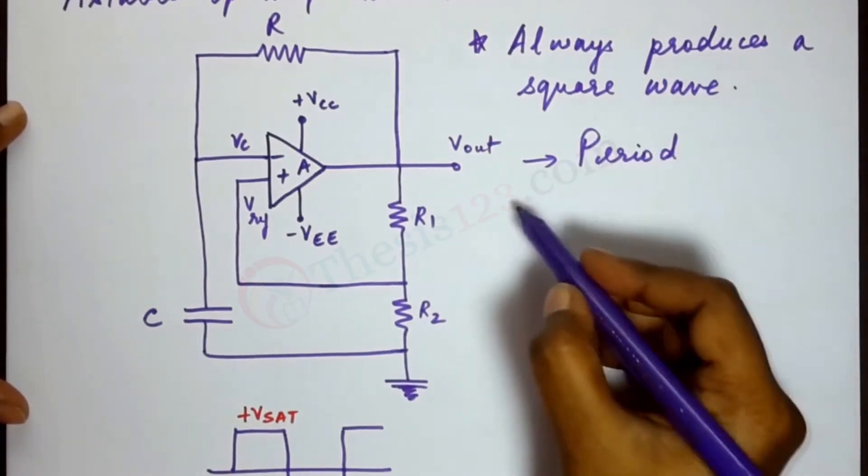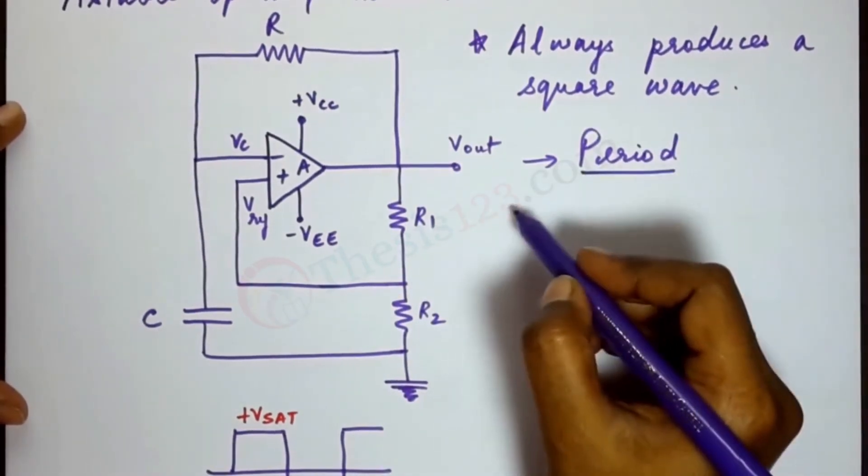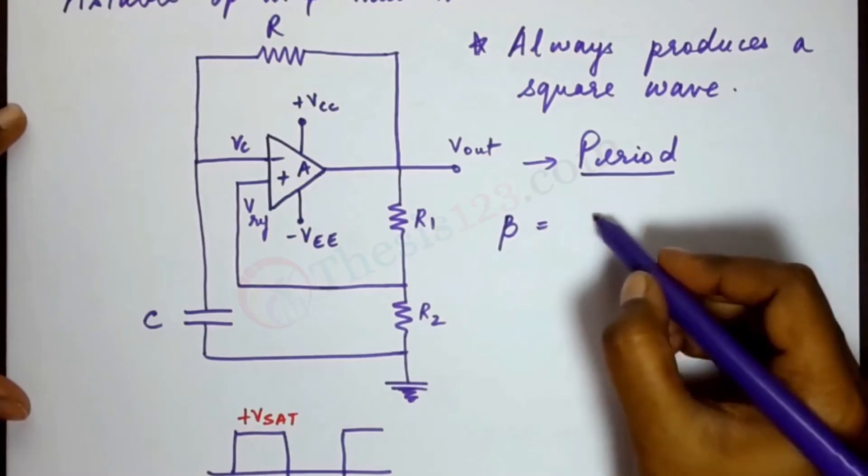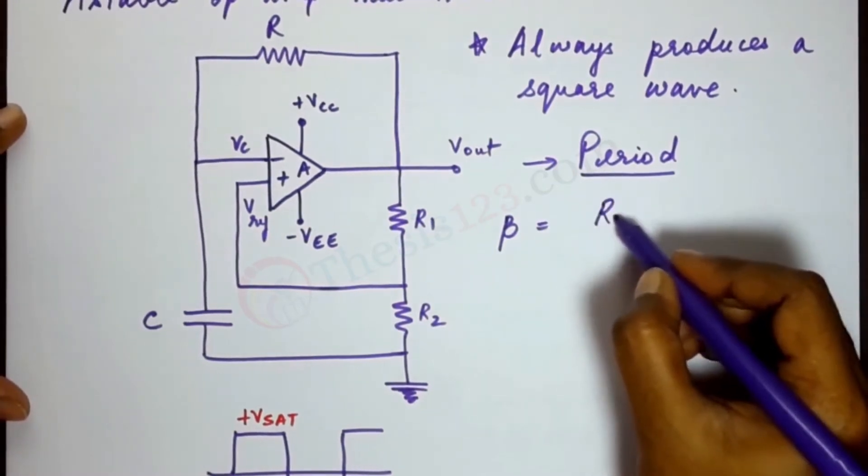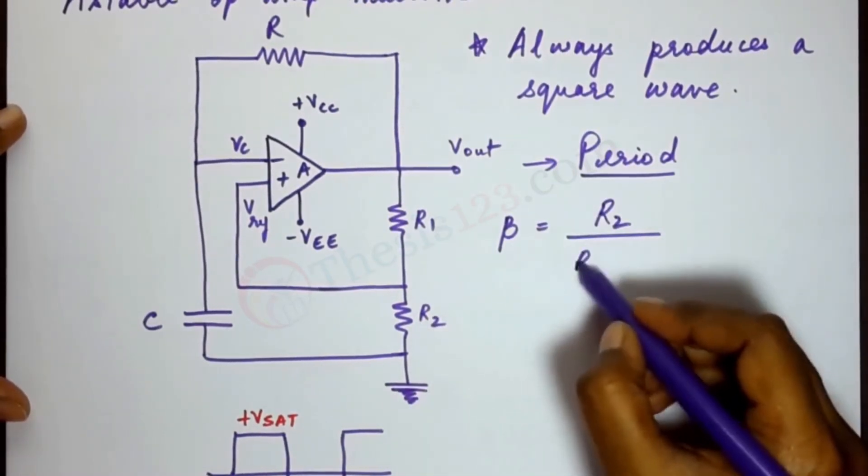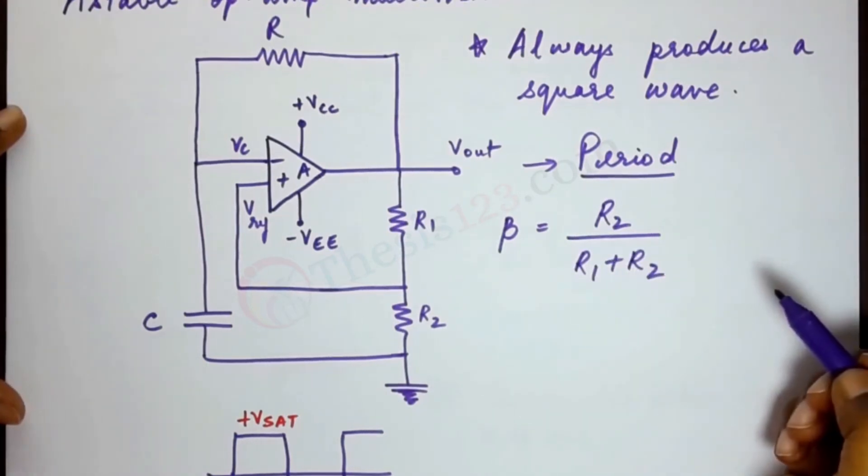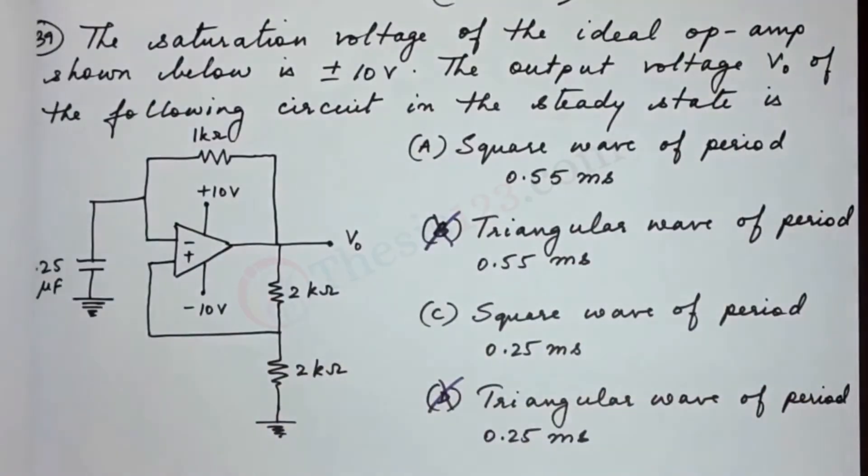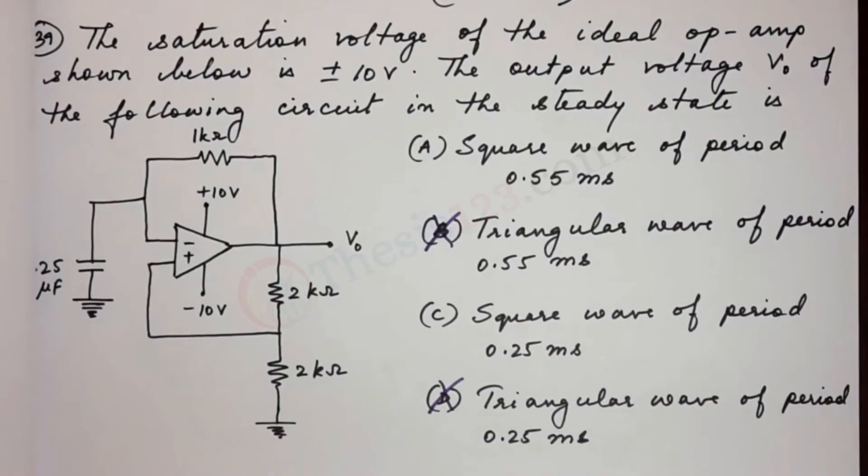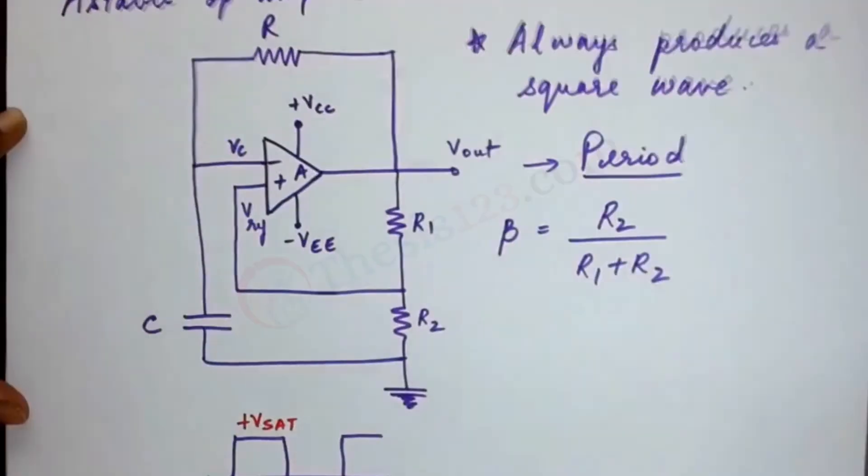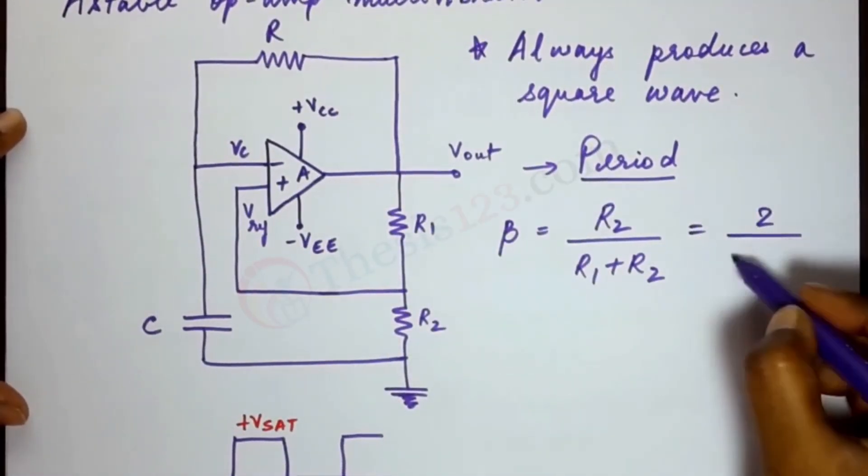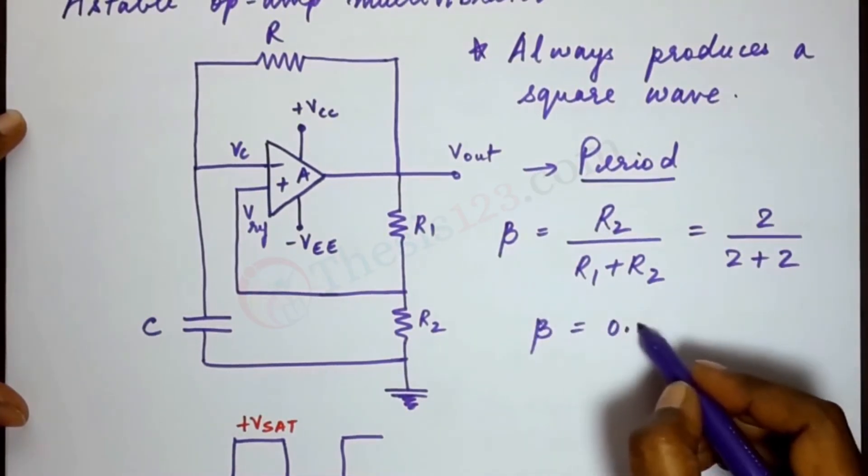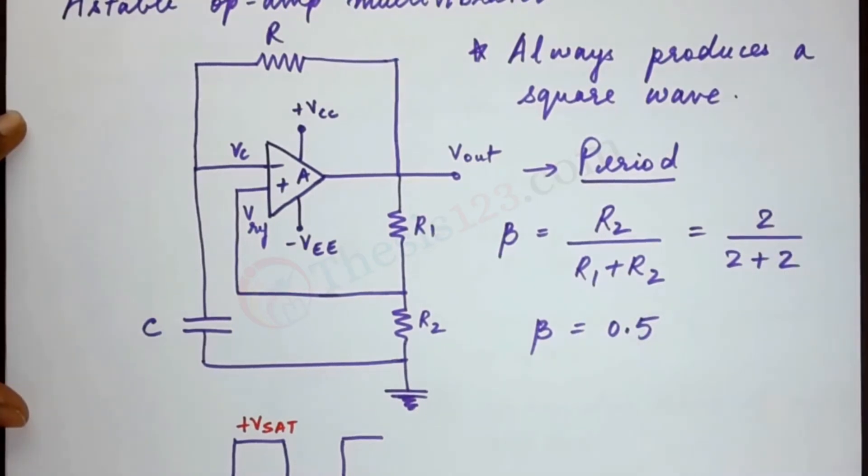So this is how we do it. First we note down the expression of the RC time constant which is beta. Beta is given as the ratio of R2 divided by R1 plus R2. So now we have the values of R1 and R2 given in the figure here. Both are 2 kilo ohms. So this would be 2 divided by 2 plus 2. So beta is 0.5.